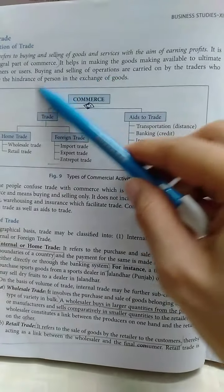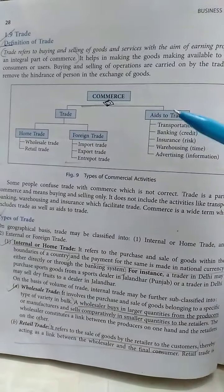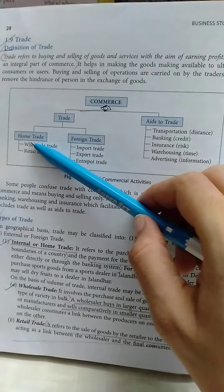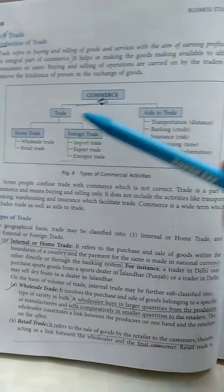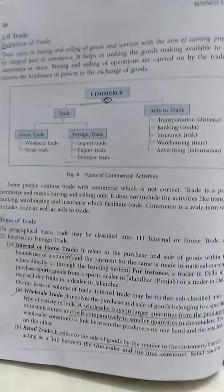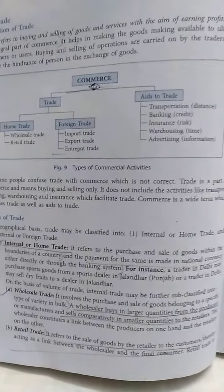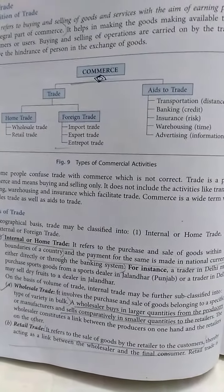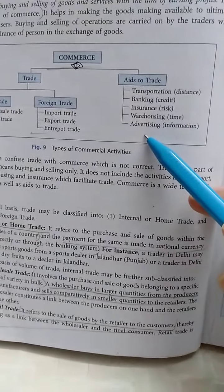Look at this diagram. Commerce is divided into two types of activities: trade and aids to trade. Trade is again divided into two parts — home trade and foreign trade. Home trade includes wholesaler and retail. Foreign trade includes import, export, and entrepot. Then comes aids to trade — activities which facilitate trade — including transportation, banking, insurance, warehousing, and advertising.